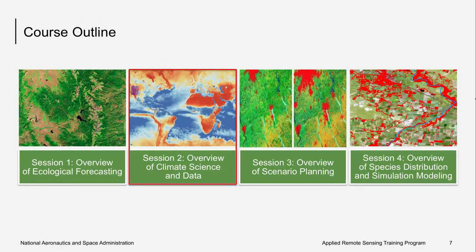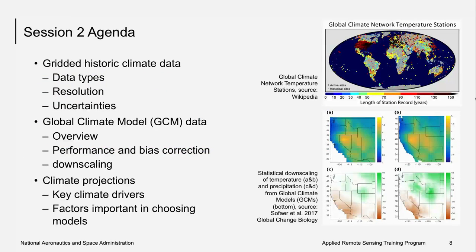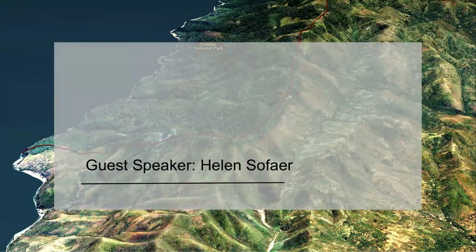Here's an overview of our course agenda. This week we'll be providing an overview of climate science and data. Our guest speaker will discuss a variety of topics: first, gridded historic climate data; then an overview of global climate models, including techniques to use those data and some of the limitations; and then climate projections, including key features and model selection factors. If there's time at the end, we'll have a short question and answer session. Now I'm going to hand it over to our guest speaker — we're going to transfer the screen sharing over.